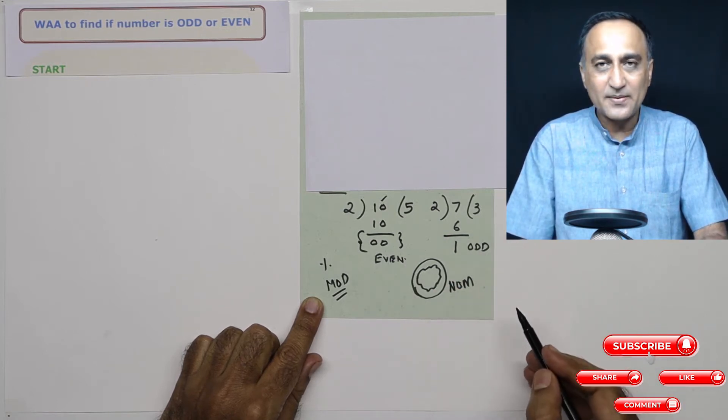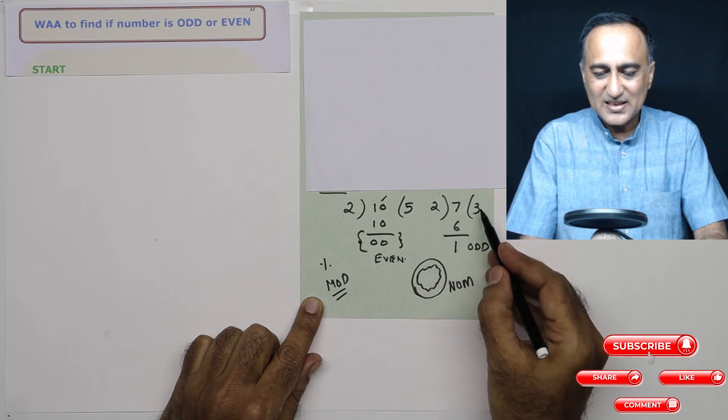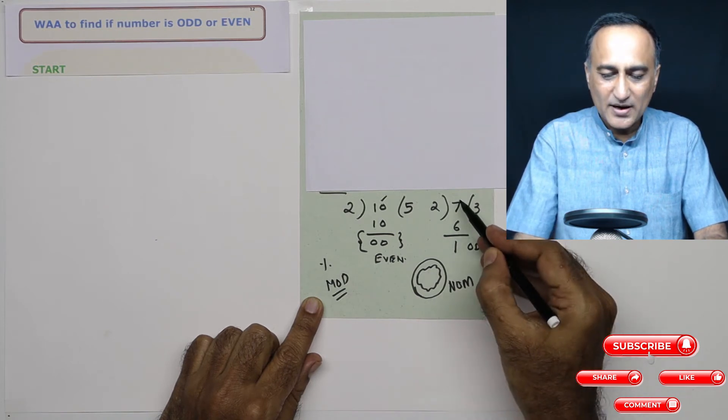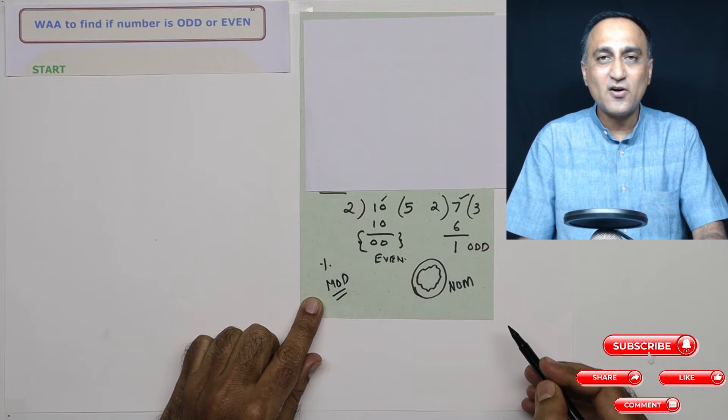Now let's take a number like seven. Two threes are six. Okay, remainder is one. Now I can confidently say seven is an odd number.